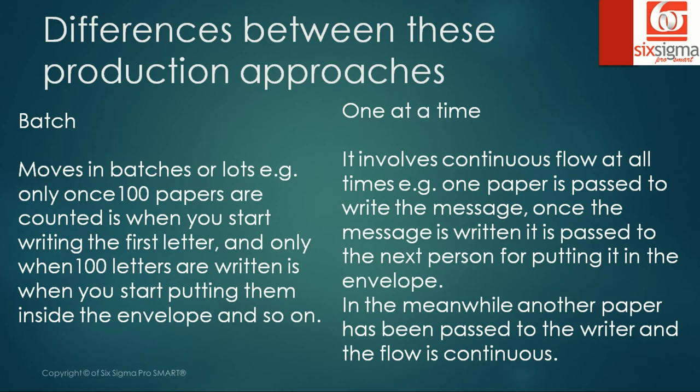Another very important point is that while doing one-at-a-time production, you will easily be able to catch defects and with your feedback bring corrections. For example, if the person folding the letters is not doing it properly, in a one-at-a-time approach you'll figure it out in the first or second attempt. Whereas in a batch approach, you will get to know about defects only when all 100 letters are with you ready to dispatch, so you cannot correct it as fast.